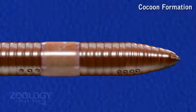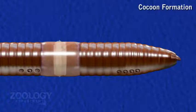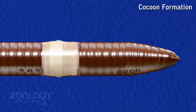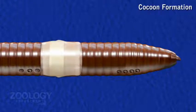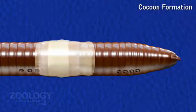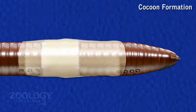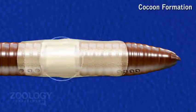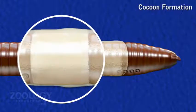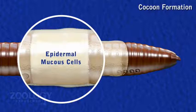The cocoon is secreted as a viscous and gelatinous substance by clitellar glands, forming a broad membranous stripe or belt around the clitellum. It hardens gradually on exposure to air into a tough but elastic tube, which becomes the cocoon or egg capsule. A slime tube is also secreted by epidermal mucus cells of the clitellum.